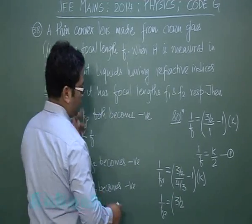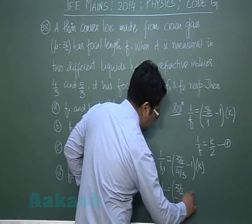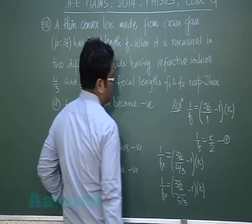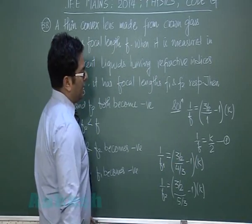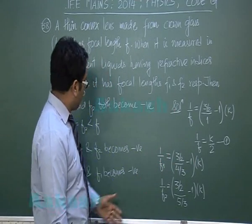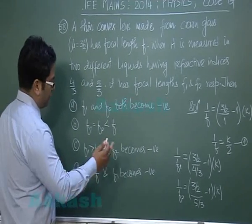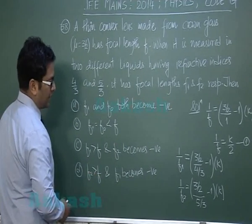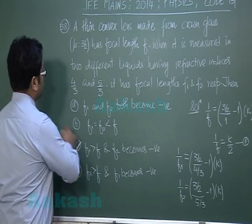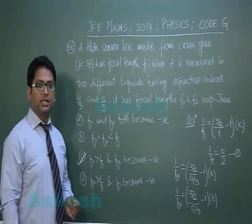From the calculations, f1 comes out greater than f, and f2 is clearly negative since (3/2)/(5/3) < 1, making the bracketed term negative. Therefore, question 38 goes with option C.